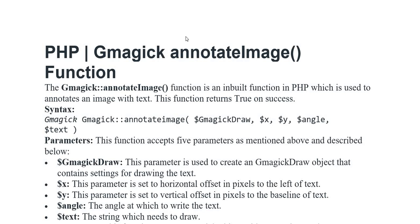Assalamu alaikum everyone. Aaj is video me I am discussing the PHP gmagick_annotate_image function. The gmagick_annotate_image function is an inbuilt function in PHP, which is used to annotate an image with text.